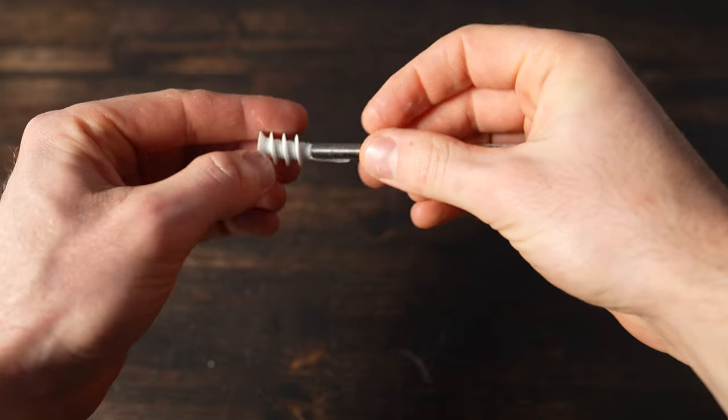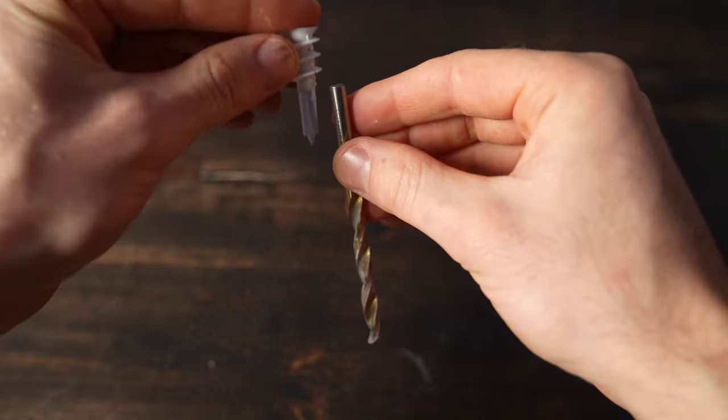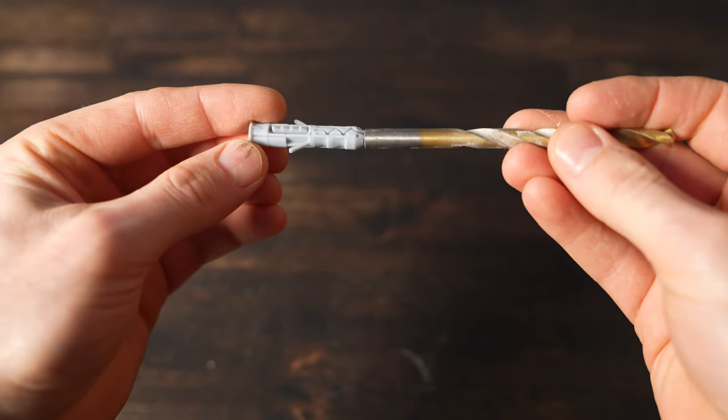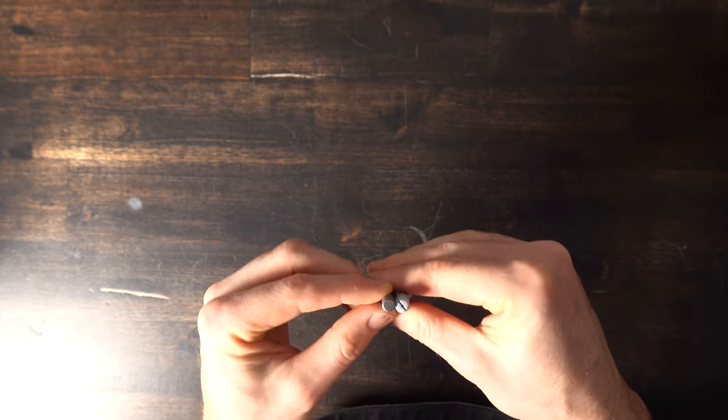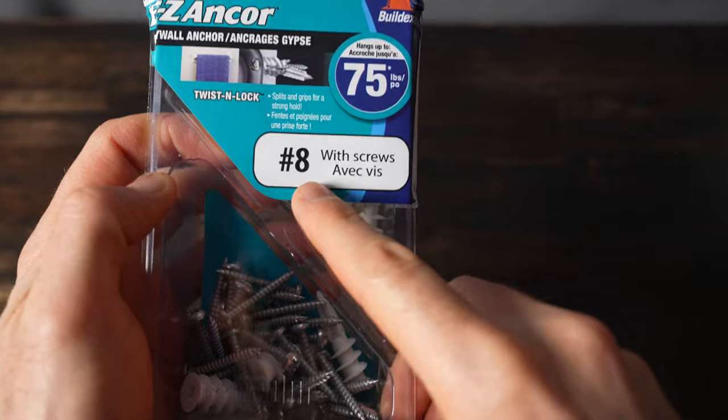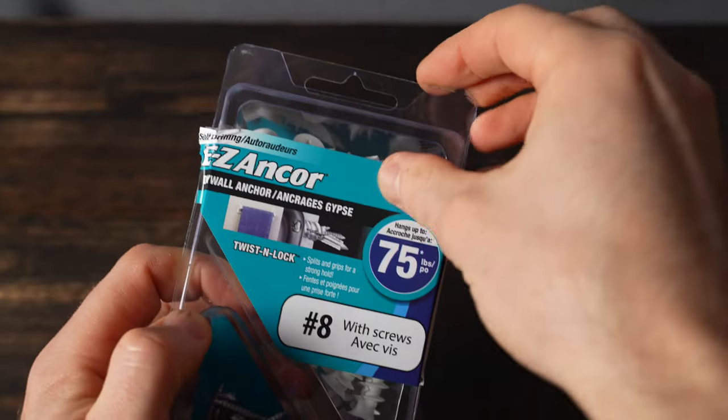Use a drill bit that matches the size of the anchor tip. For regular anchors, the size of the drill should be a little smaller than the width of the anchor. I use the following anchors and screws: number eight, hold up to 75 pounds.